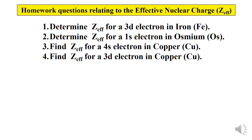Time for some homework questions on effective nuclear charge. Determine Z-effective for a 3d electron in iron. Determine Z-effective for a 1s electron in osmium. Find Z-effective for a 4s electron in copper. Find Z-effective for a 3d electron in copper. If you face any difficulty finding answers, you can comment and I will get back to you. Don't forget to subscribe, share, and like my videos. Thank you so much for watching — I hope you enjoyed it, and I will meet you in my next interesting tutoring session.